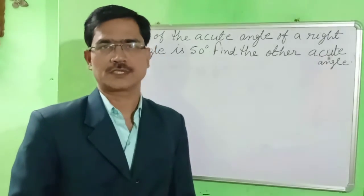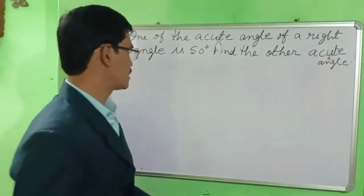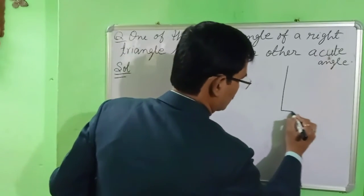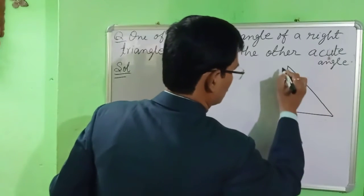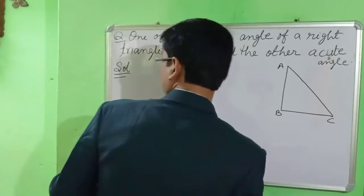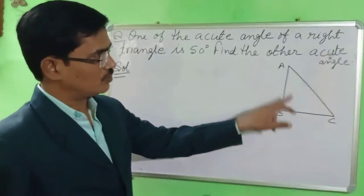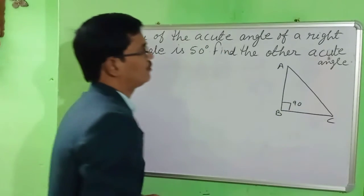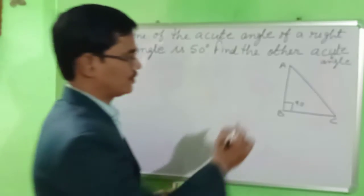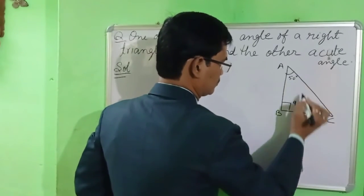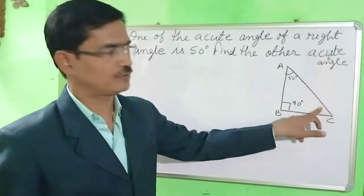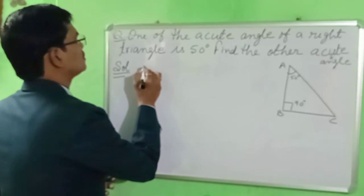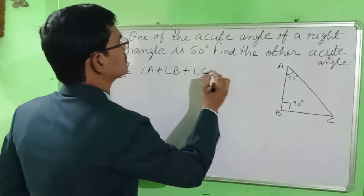An acute angle is an angle which is less than 90 degrees. Let us start solving it. In triangle ABC, one angle is a right angle — that is 90 degrees. One acute angle is given as 50 degrees. You have to find the other angle. We know the sum of angles in a triangle is 180 degrees, so we write: angle A plus angle B plus angle C is equal to 180.